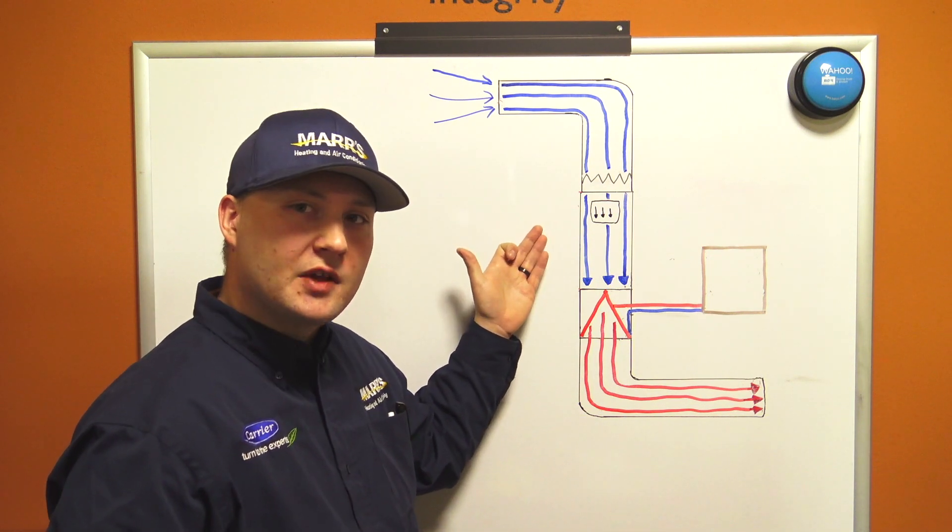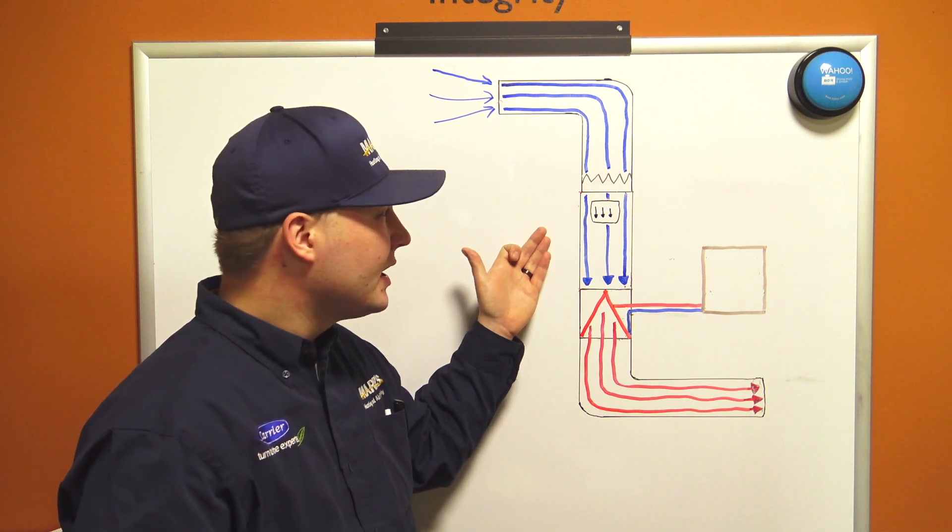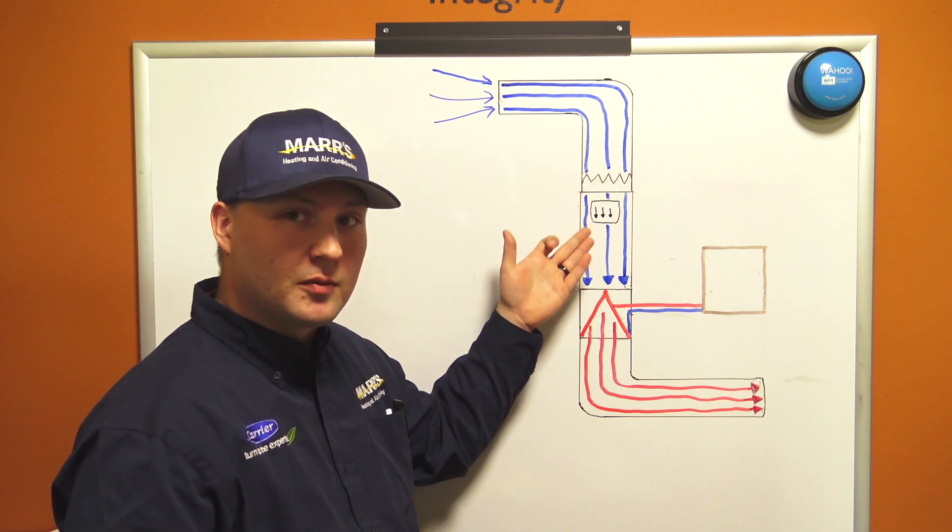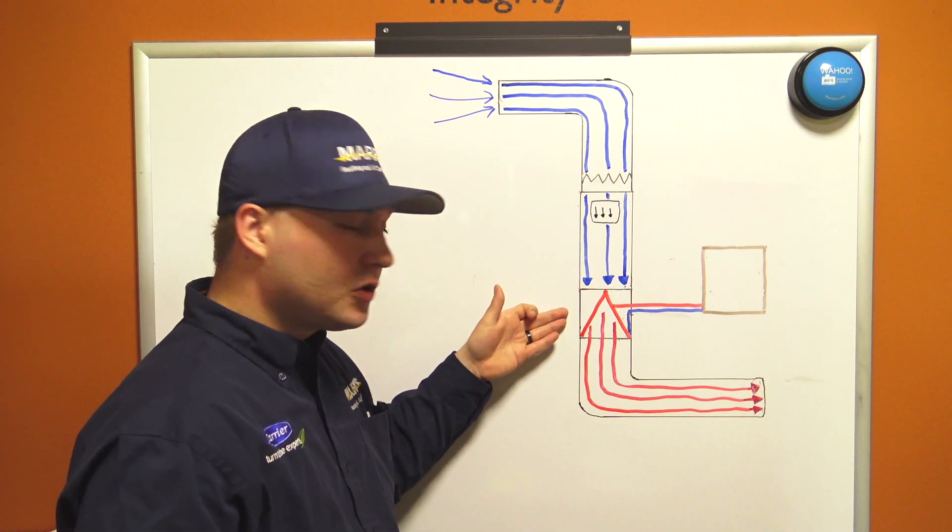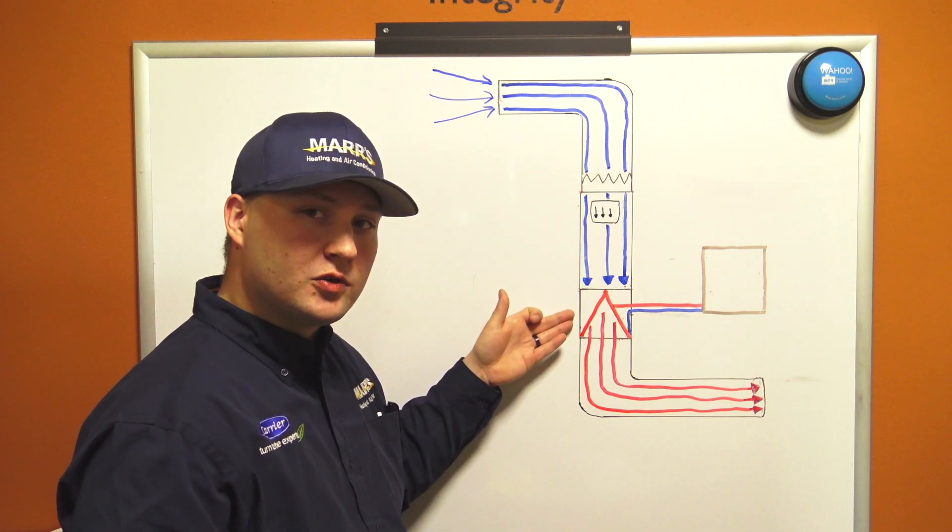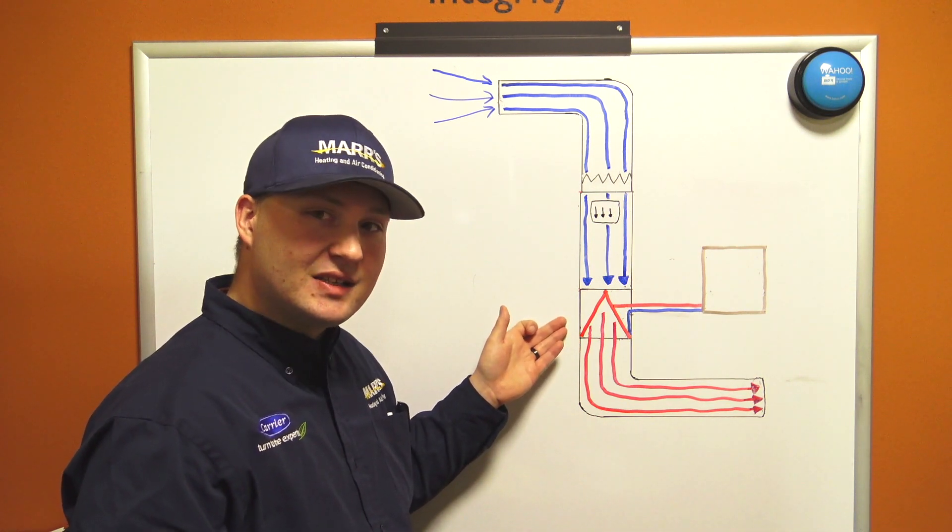This can either be a gas furnace or an electric furnace. The main component we're going to be using is the blower motor. We have an indoor coil that we're running refrigerant through and we're connecting this indoor coil to an outdoor coil slash compressor via two copper refrigerant lines.